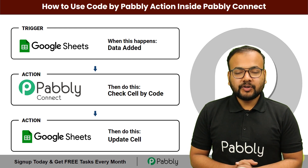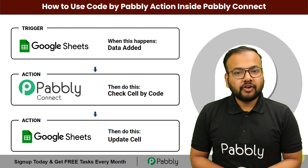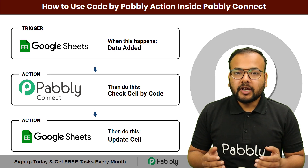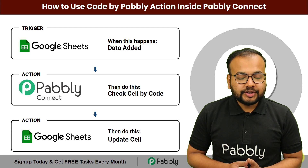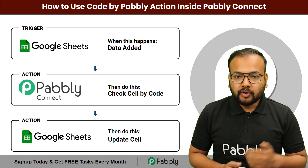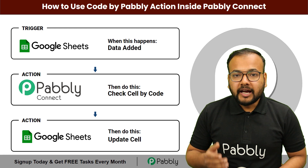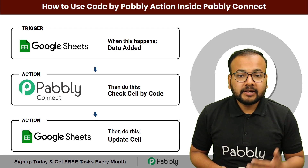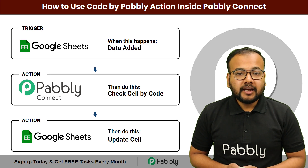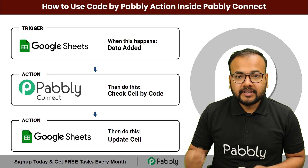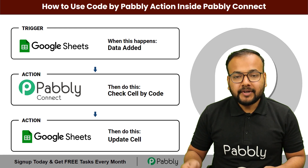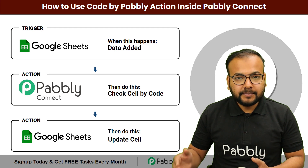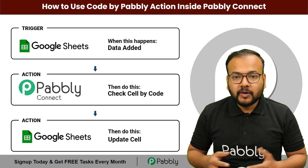In this video we are going to talk about a new action feature of Pabbly Connect called Code by Pabbly. With this you can run JavaScript code inside your automation workflows. To show you a demo, I am taking a use case where we are going to check the data of a spreadsheet in Google Sheets, and if any cell is empty, we are going to fill it automatically using JavaScript code.